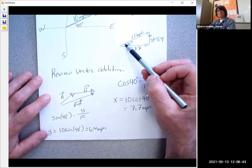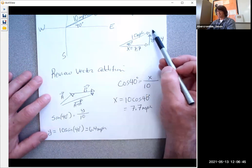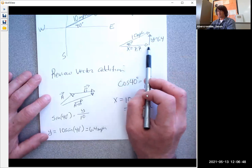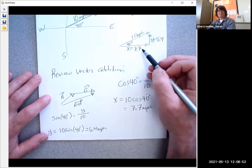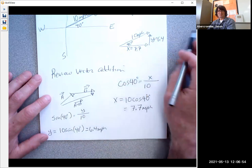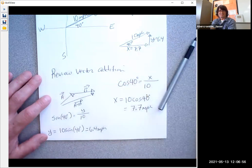As you walk this direction at 10 miles per hour, you're simultaneously walking in the x direction at 7.7 miles per hour and in the y direction at 6.4 miles per hour. These are called the x and y components of the vector. Hope this helped out. We'll see you next time.